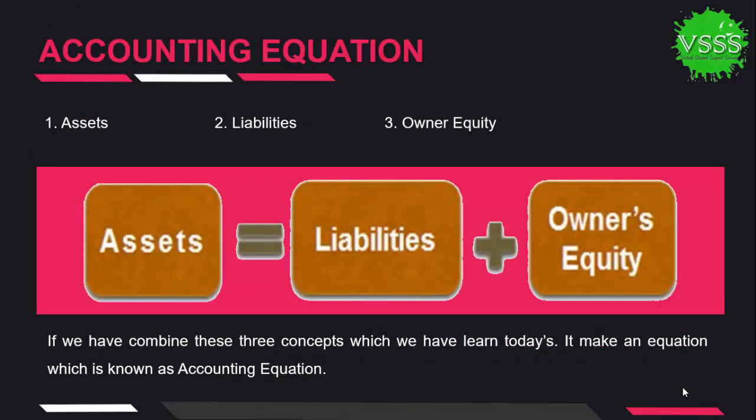The last topic in today's class is the accounting equation. We have discussed three main concepts of financial accounting: assets, liabilities, and owner's equity. When we combine these three topics — assets, liabilities, and owner's equity — they form an equation, which is known as the accounting equation.